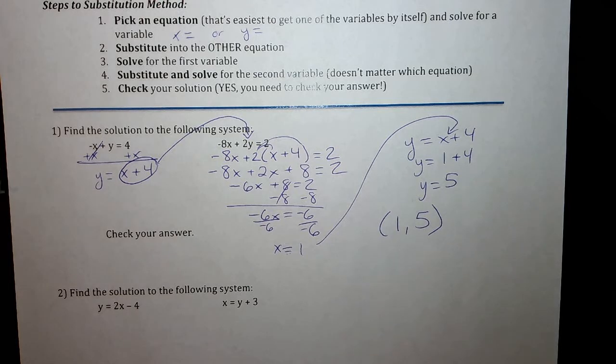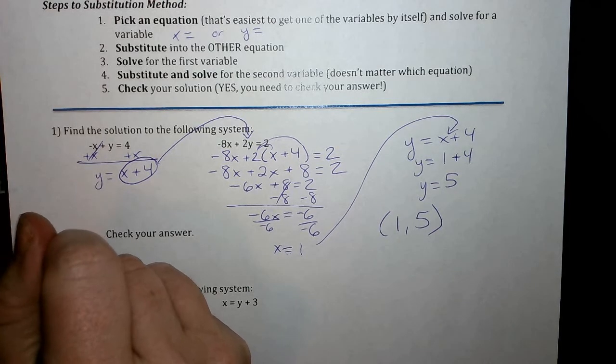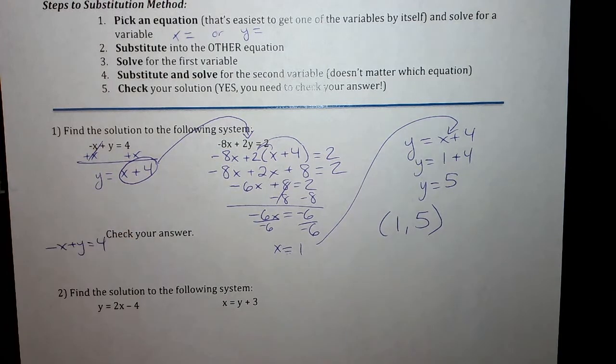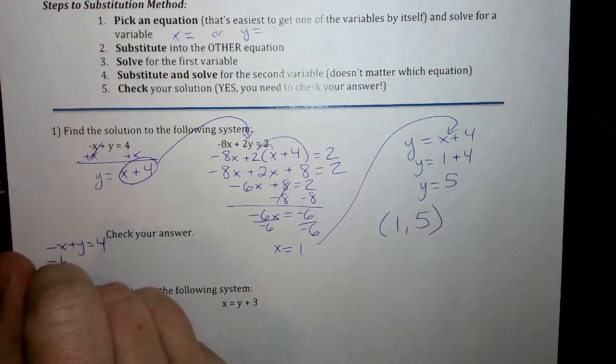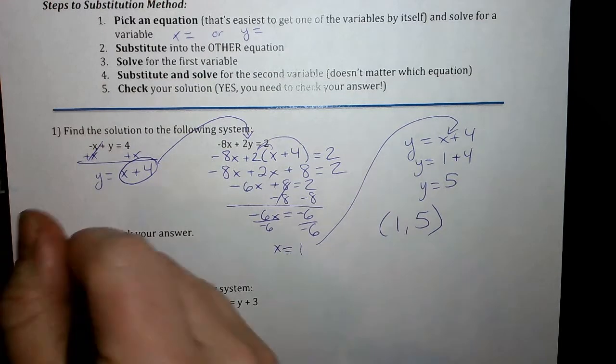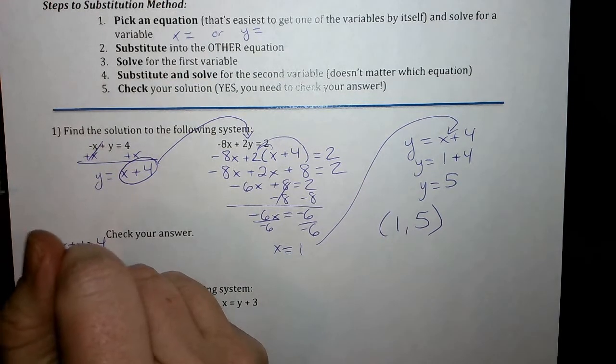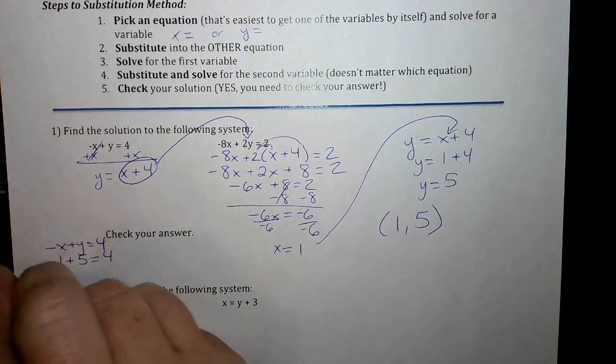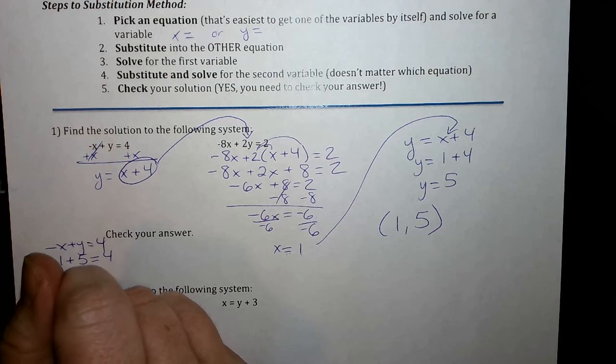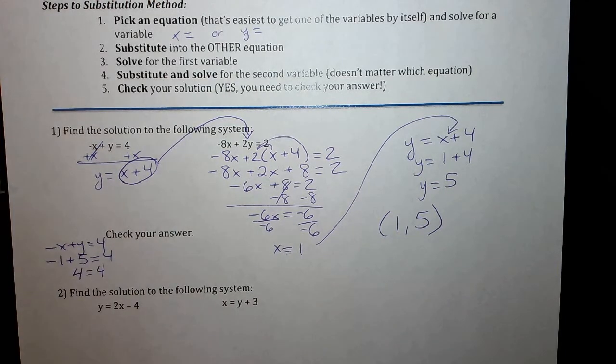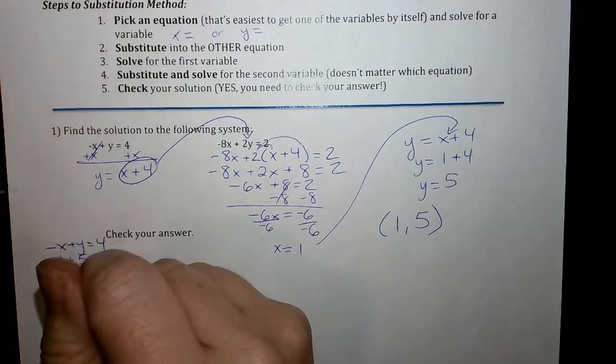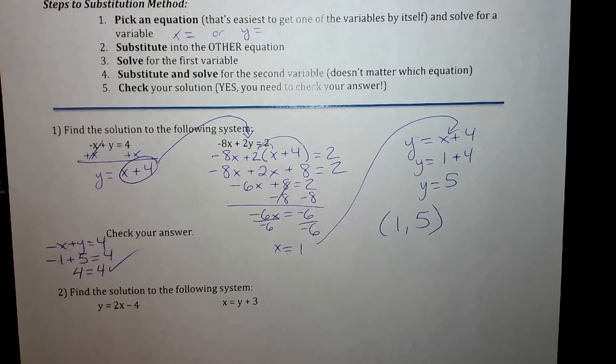So we have to plug these numbers into both equations because remember our solution has to work in both equations. So my first equation, I had negative x plus y equals 4. When I plug these numbers in, I get negative 1 because I plugged 1 in for x, 5 is y. So negative 1 plus 5 is positive 4. Did we get 4 equals 4? Yes. So it works in the first equation.